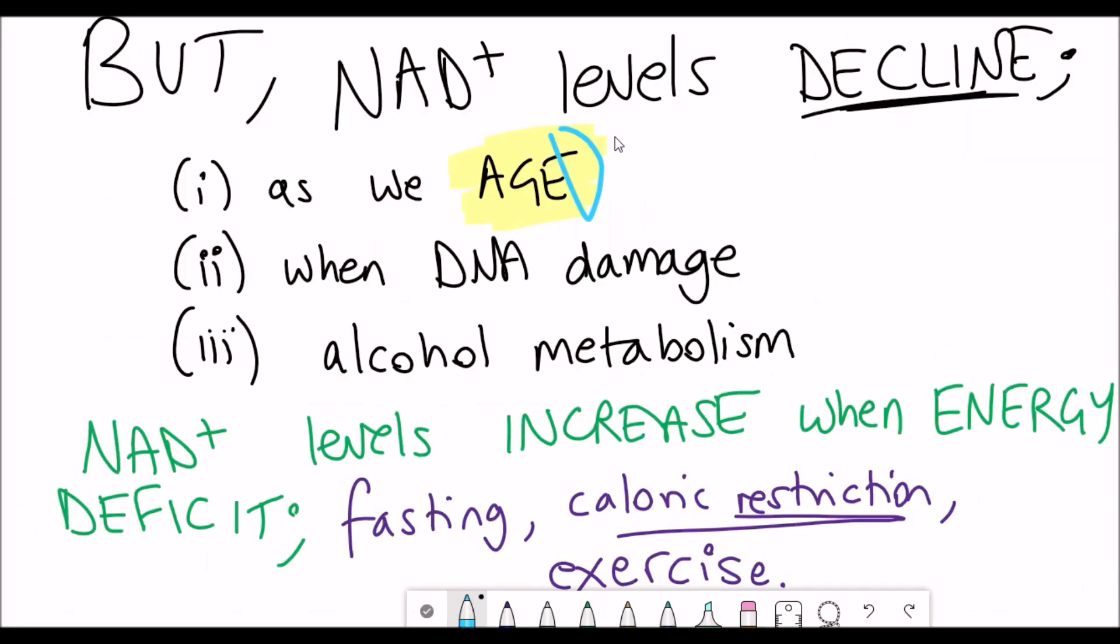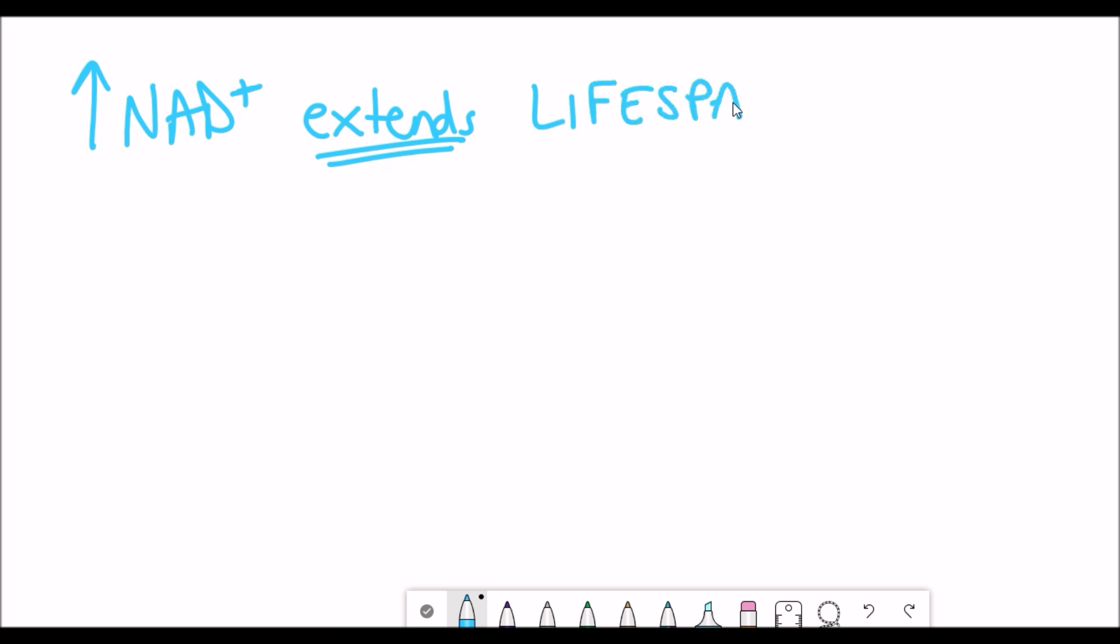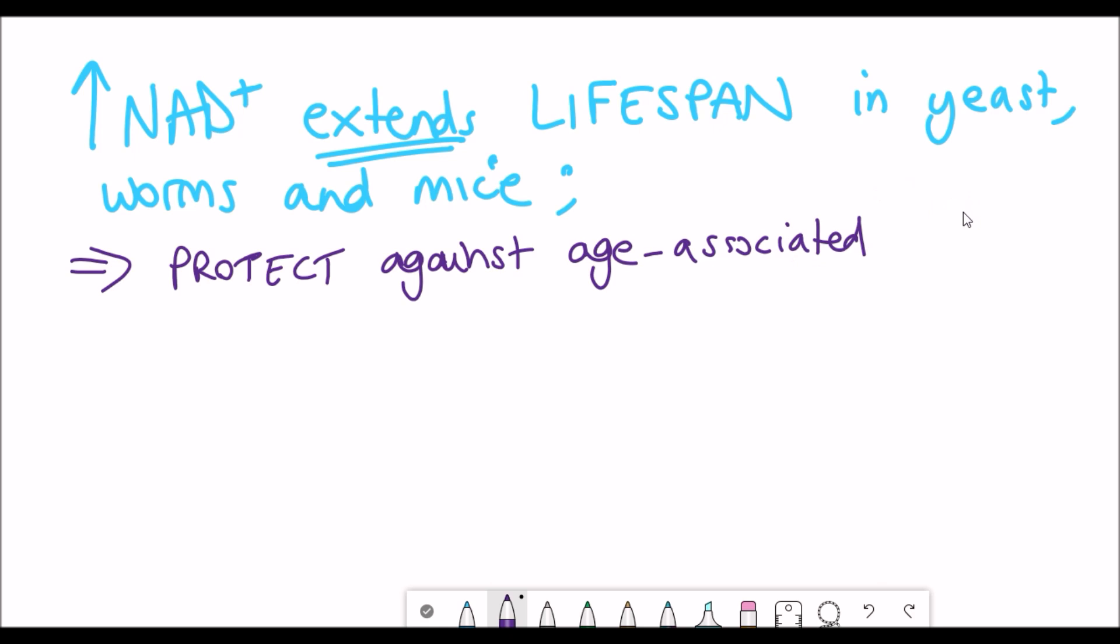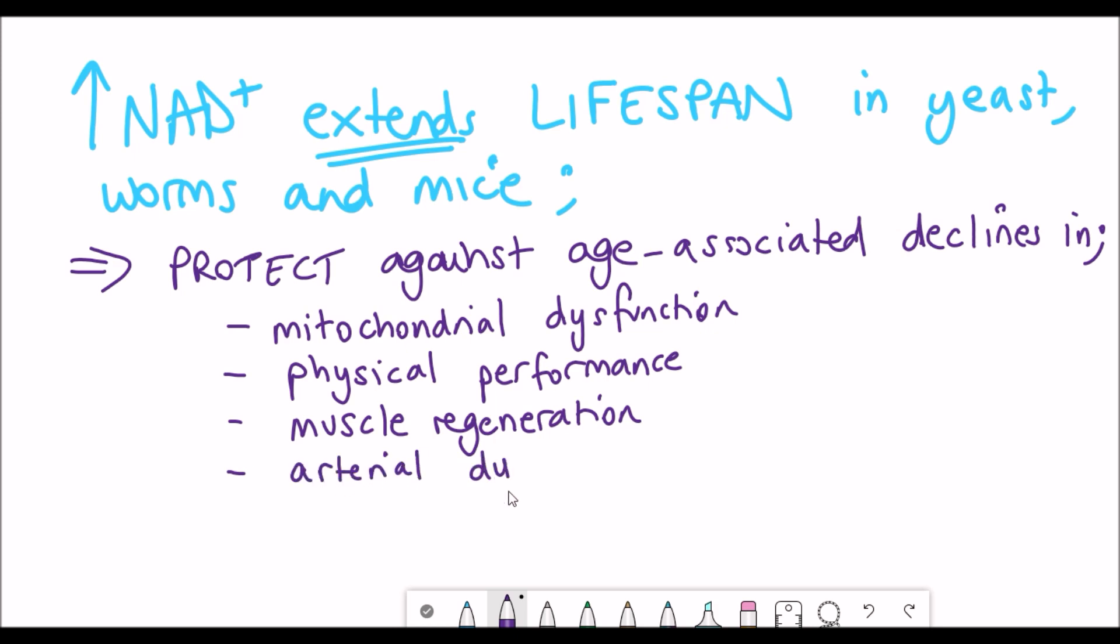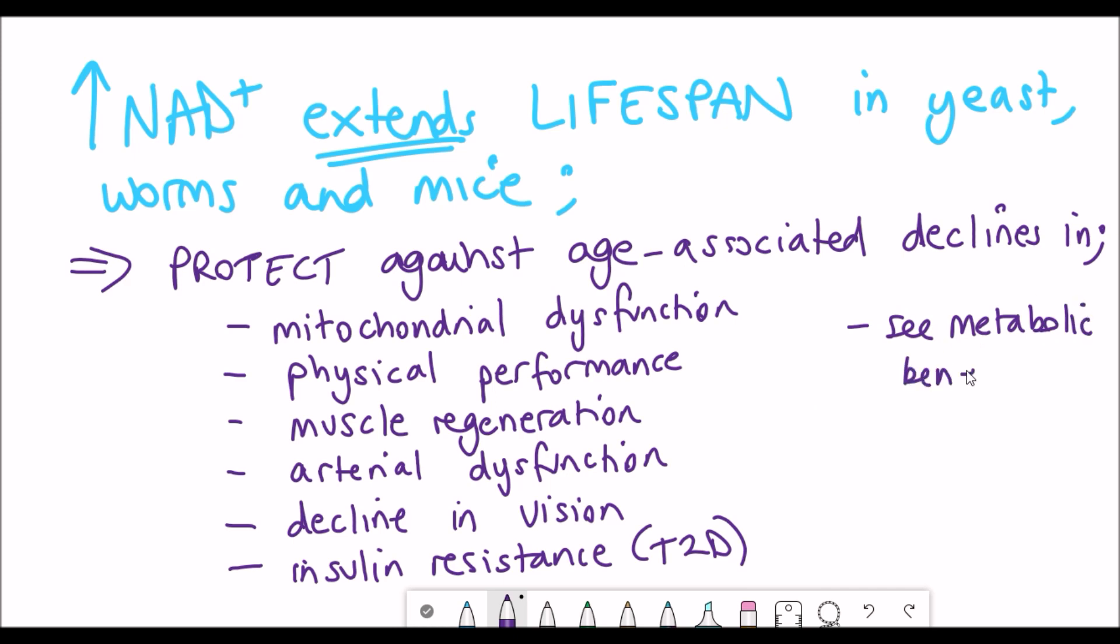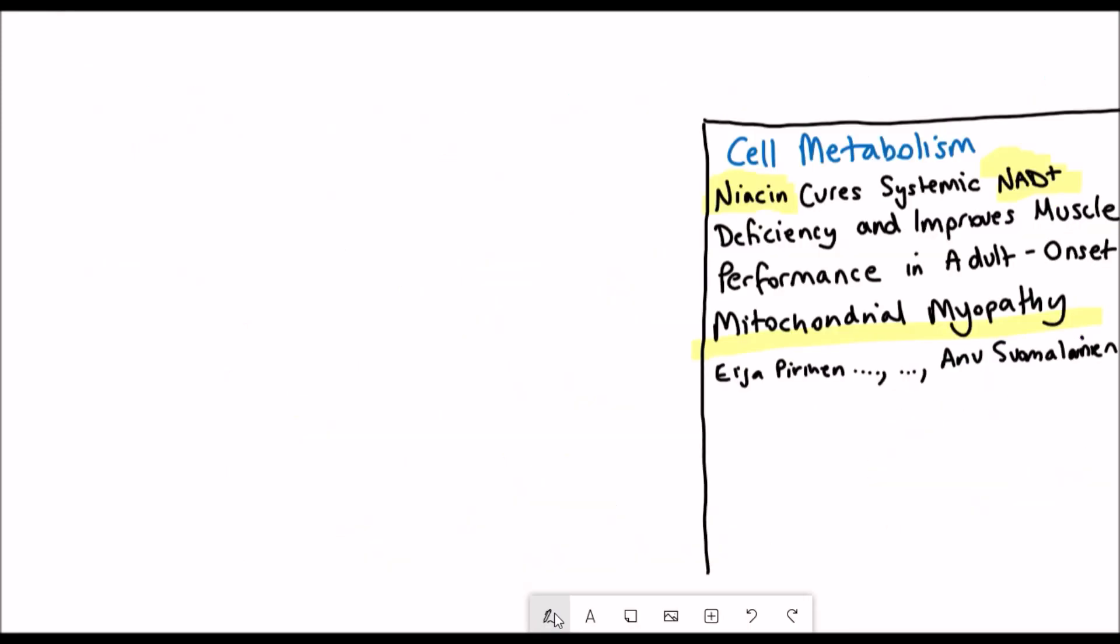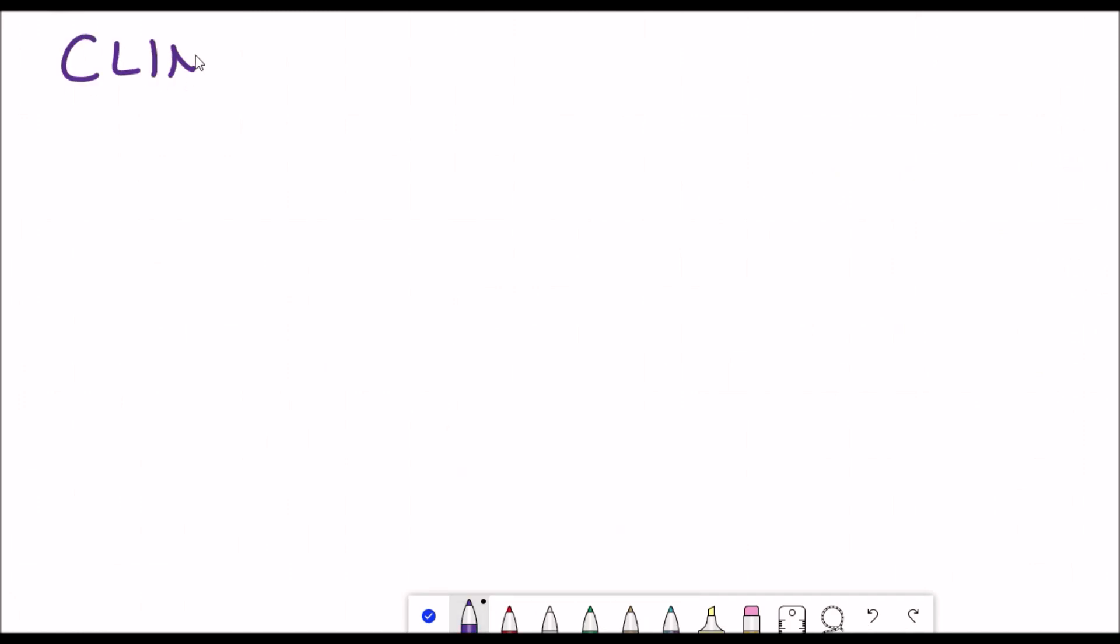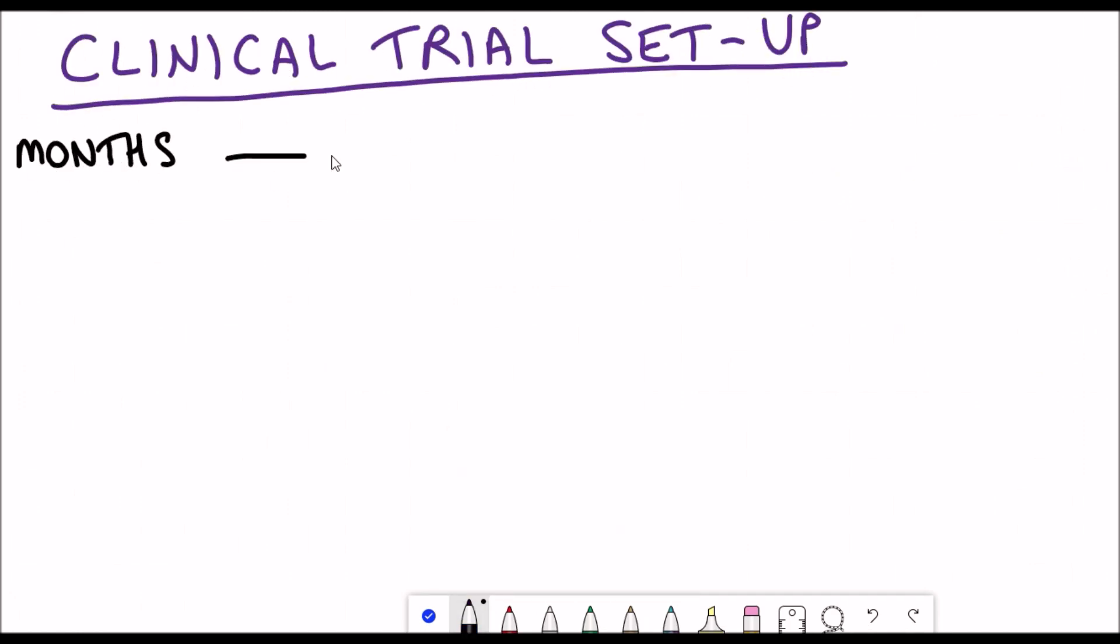And so the push towards the human clinical trials here is due to the positive benefits they've already seen in mouse studies. By increasing the NAD Plus levels in mouse models of mitochondrial myopathy they saw an improvement in the mitochondrial dysfunction and increased muscle strength. In this study they wanted to see what would happen if they treated human patients with niacin to try and increase the NAD Plus levels.